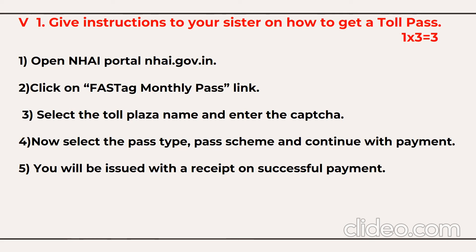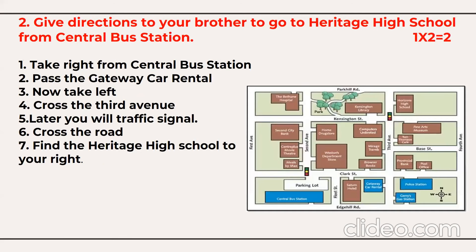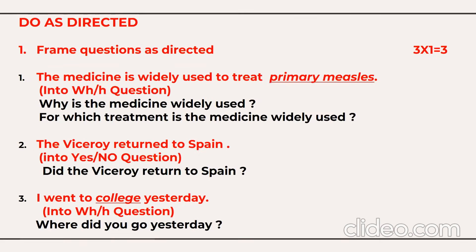The next three-mark question is on instructions, with a choice. Give instructions to your sister on how to get a toll pass. The most important thing when writing instructions is to use the main verb first — that's called imperative sentences. Open the NHAI portal. Click on FastTech monthly pass link. Select the toll plaza name. Enter the captcha. Select the pass type and pass scheme. Continue the payment — it will be issued with a receipt on successful payment. Just five or six steps for three marks.